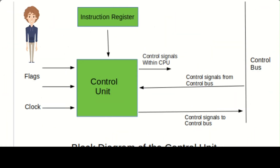In summary, the control bus is an important component of modern computer systems that allows different components to communicate with each other and control the behavior of the system as a whole. Signals carried by the control bus include clock signals, interrupt signals, reset signals, memory enable signals, and IO signals, all managed by the control unit.